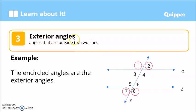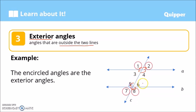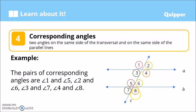If we have angles inside the two lines, we also have what we call exterior angles — angles that are outside the two lines. In this figure, we have angle 1, angle 2, angle 8, and angle 7. These angles are outside the two parallel lines, so they are called exterior angles.